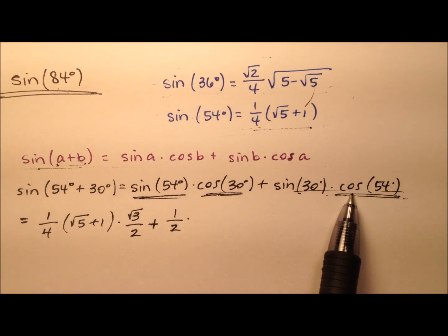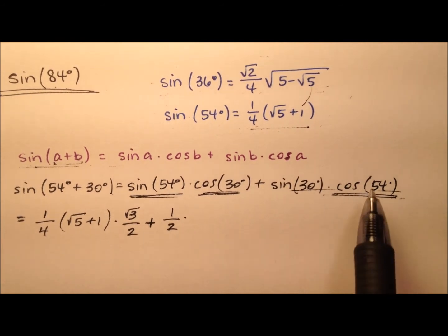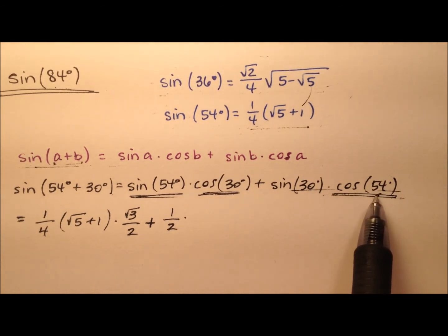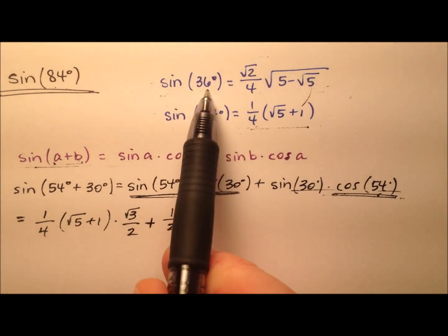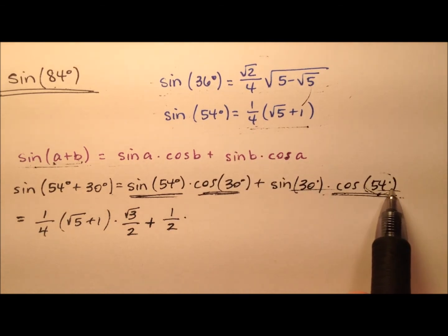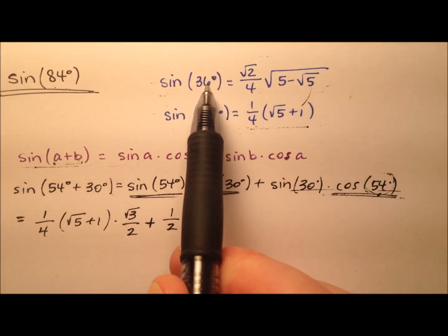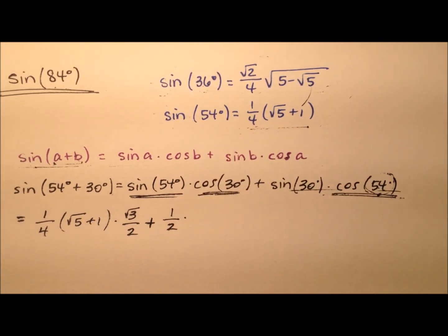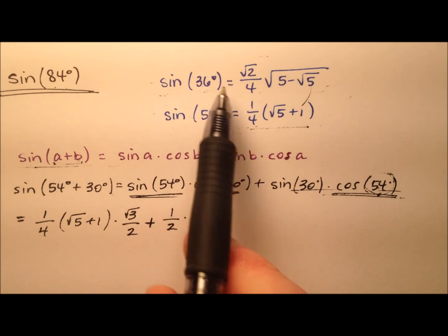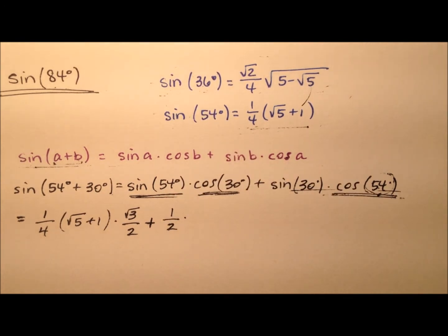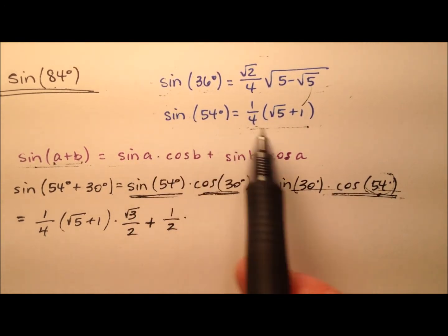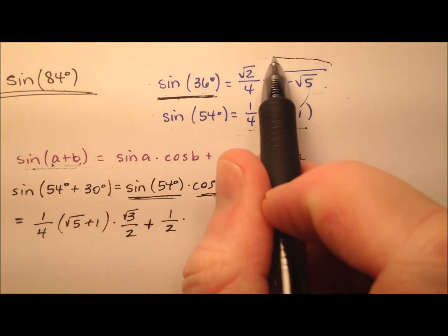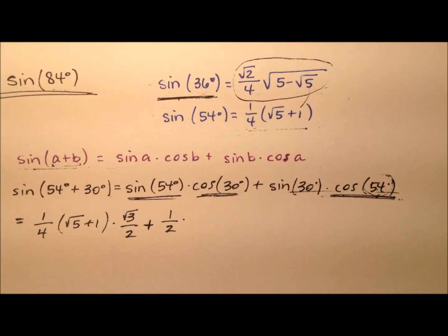Sine and cosine have a nice relationship where the cosine of one angle — in this case 54 degrees — is the same as the sine of the complement of that angle. Since 36 plus 54 adds up to 90 degrees, these two angles are complementary. So the cosine of 54 degrees is also the sine of 36 degrees, and we'll use that expression here.